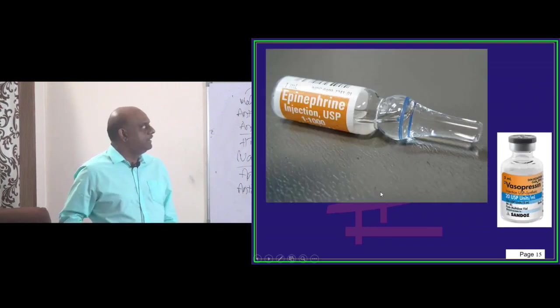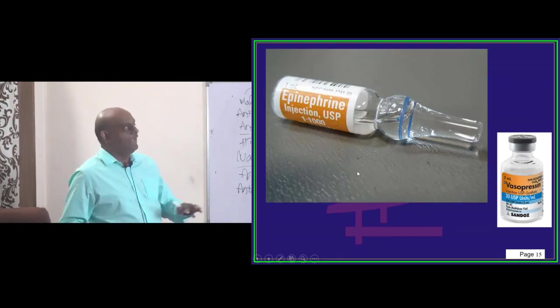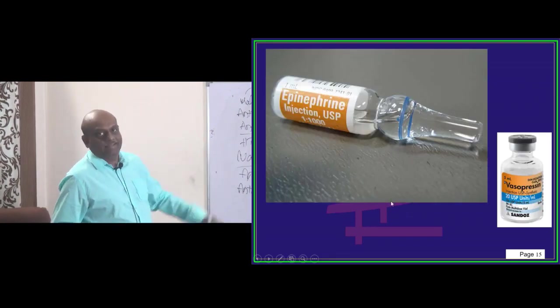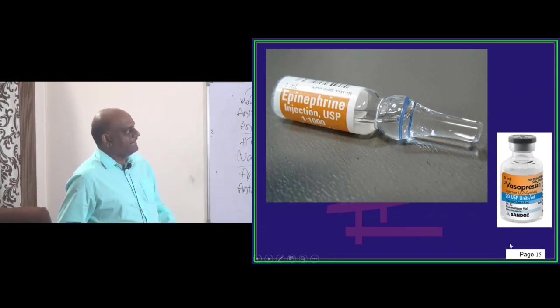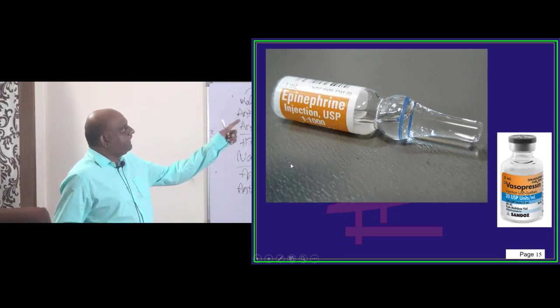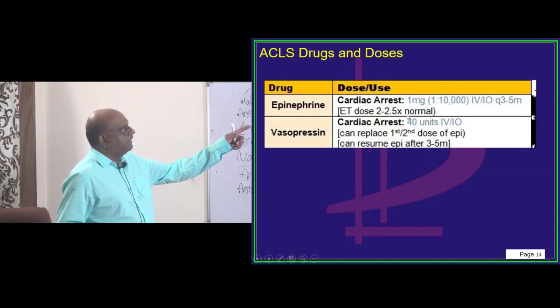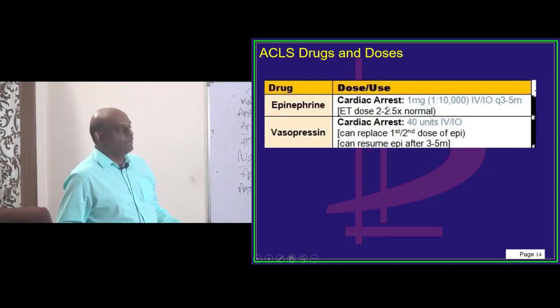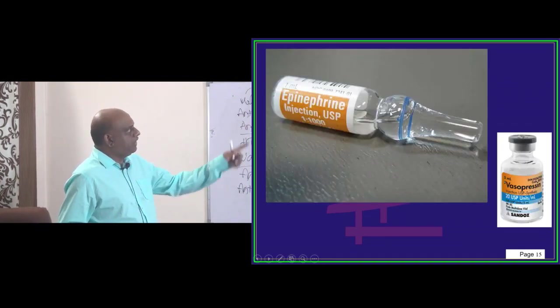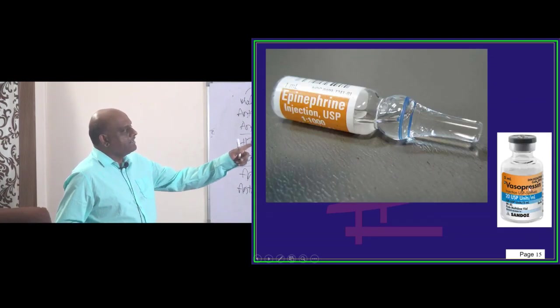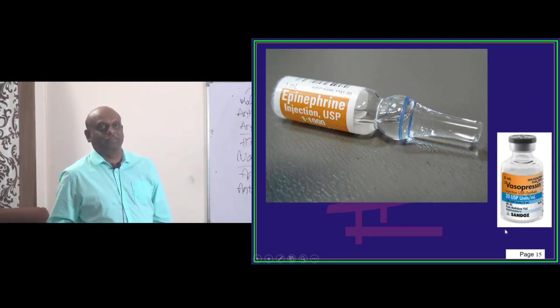Once you see the injection, you won't forget. Epinephrine injection looks like this, vasopressin looks like this. So epinephrine 1 is to 10,000, 1 milligram you have to administer and then this is the typical vasopressin.